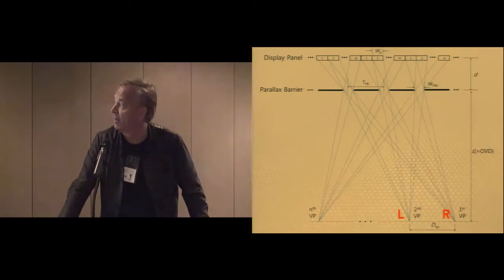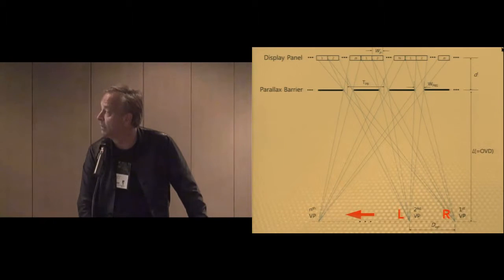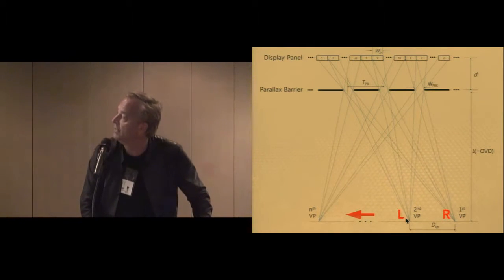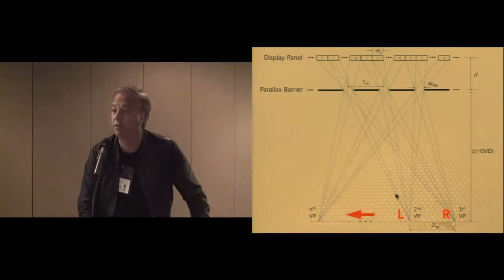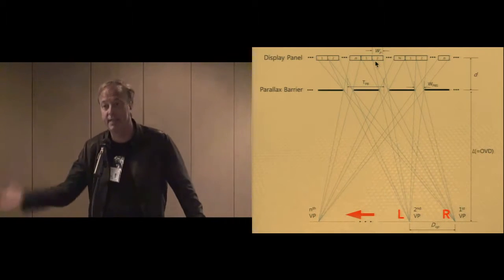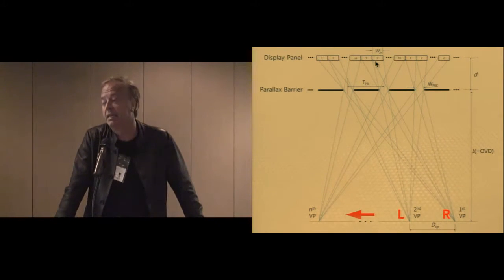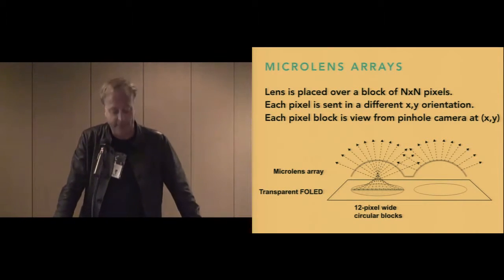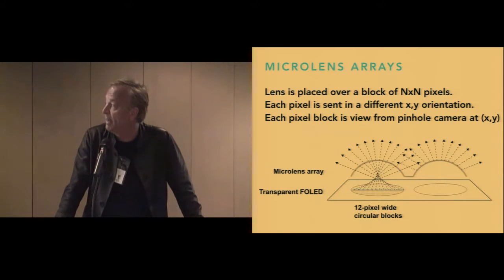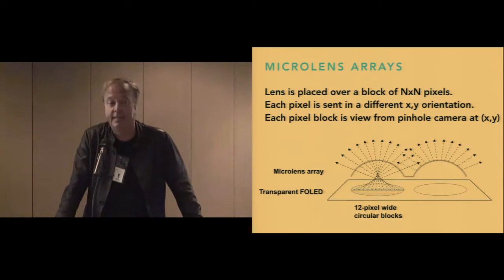This is what a parallax barrier does. We have rays emanating out of a scene. The left image traces to the second column and the right image traces to the first column. As we move — the motion parallax — this becomes N columns. This is how we can create not just stereo images but also motion parallax. The problem with parallax barriers is that while they are easy to build, they darken the screen quite a bit. So we chose a microlens array, which instead spreads the light. We place a lens over a block of N-by-N pixels. Each pixel is sent in a different XY orientation, and each pixel block is really the view from a pinhole camera filming the scene at a virtual location XY in the 3D scene.